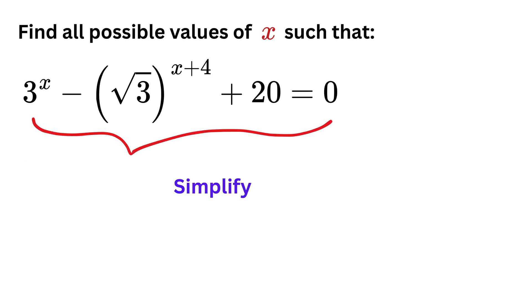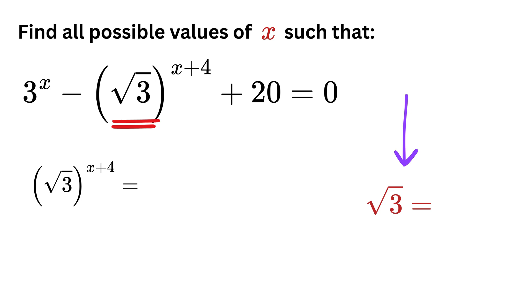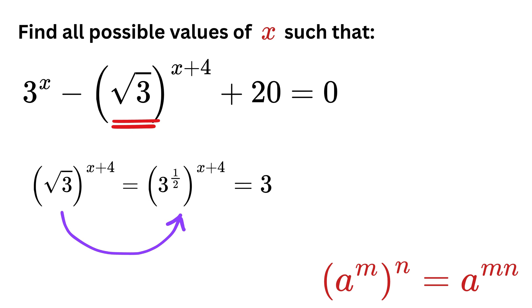Let us simplify this equation. First, remember that root 3 is just 3 raised to 1 divided by 2. Now we have a power rule which says that if we take a number like a raised to m and then raise the result to n, we get a raised to m times n. So root 3 raised to x plus 4 becomes 3 raised to 1 over 2 raised to x plus 4, which simplifies to 3 raised to x plus 4 whole divided by 2.